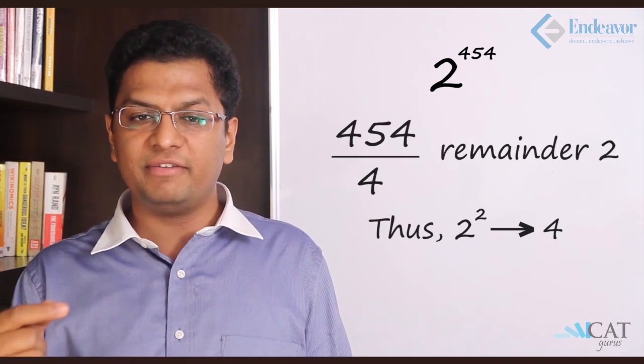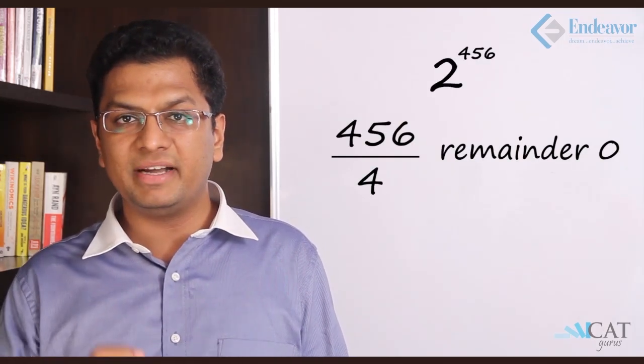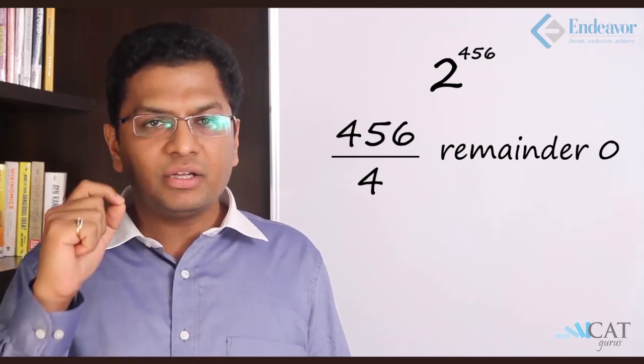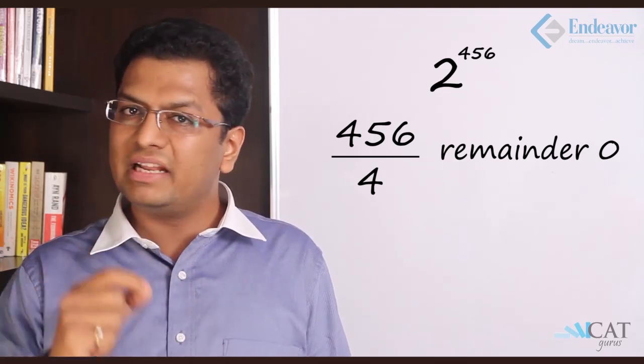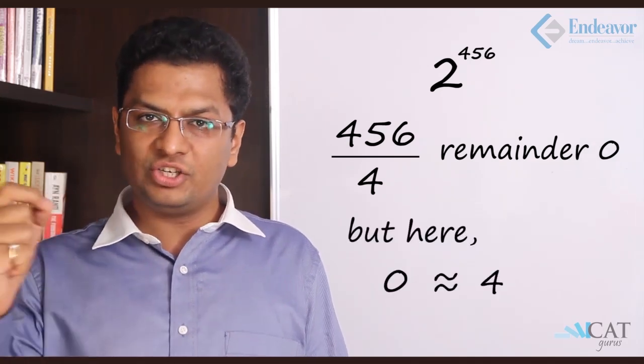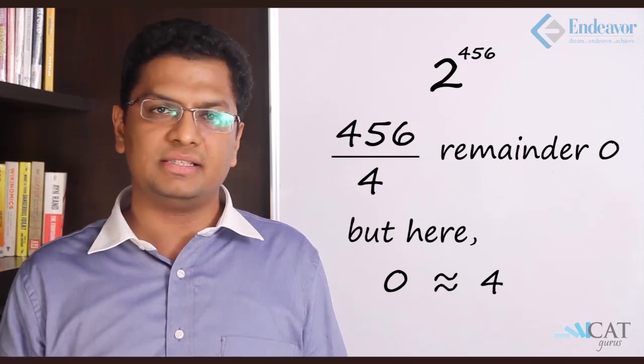Let's do it slightly more technically. Say 2 to the power 454, now let's divide it by 4. So 454 divided by 4, the remainder is 2, hence it will be 2 squared. What happens if it's 2 to the power 456? It is perfectly divisible by 4, the remainder is 0. But technically, can you ever have a remainder of 4? So 2 to the power 4 will never come across, which here is equal to 2 to the power 0. So if it is 0 as the remainder, then 2 to the power 4, which is 2, 4, 8 and 6, 6 will be the last digit here.